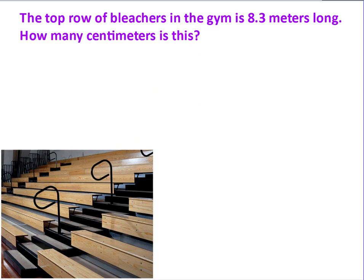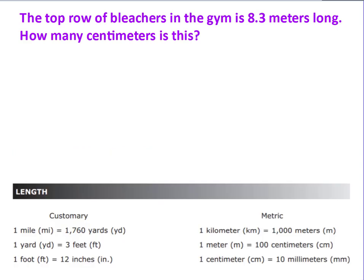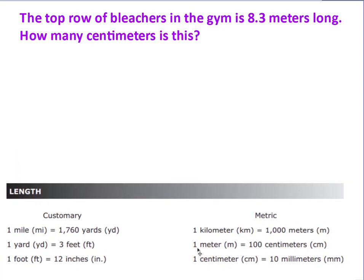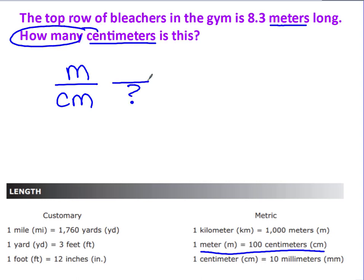We're going to do one more. The top row of bleachers in the gym is 8.3 meters long. How many centimeters is this? I'm going to cut out the little part of the formula chart that you're going to need. And here you can see where you're comparing meters to centimeters. I go back up to the problem. The top row of bleachers in the gym is 8.3 meters long. How many centimeters is this? My word fraction is what I'm comparing, meters to centimeters. And what is it I'm looking for? I'm looking for centimeters. That's where my question mark goes. But I've been given how long the row is. So it's 8.3 meters.